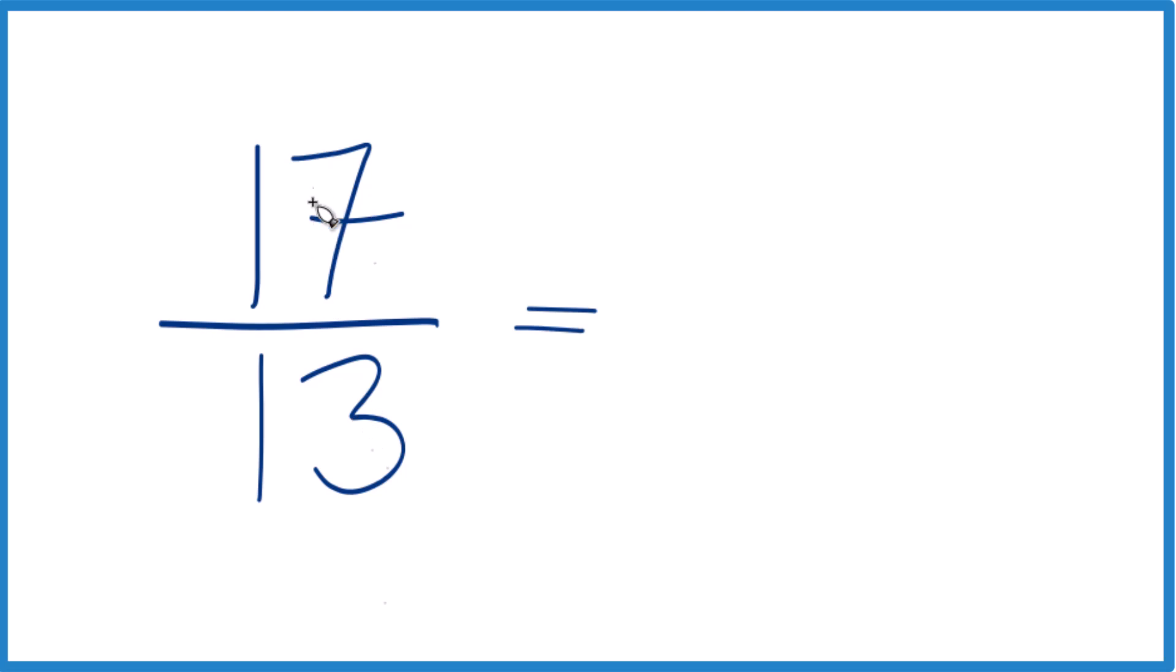13 goes into 17. So we could say 1 times 13, that's 13, and then we'd have 4 left over. Keep this 13 the same here.